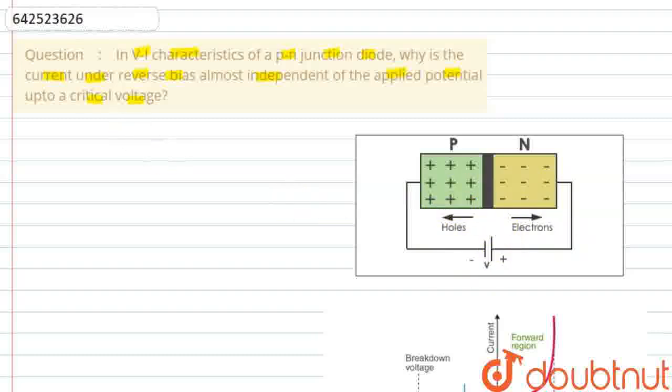We'll see what happens in reverse bias. In reverse biased condition, the current flow is due to minority charge carriers.